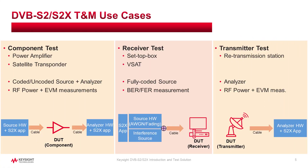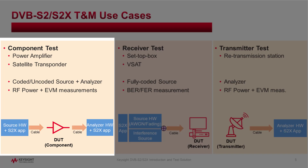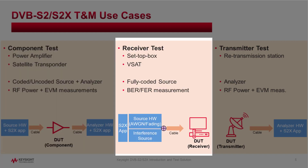DVB-S2 and DVB-S2X testing is similar to previous DVB-S. There are three scenarios with different testing cases: component tests, receiver tests, and transmitter tests. For component tests, it could be a power amplifier or satellite transporter, and it needs both source and analyzer. The source can be coded or uncoded since it mainly focuses on RF performance. The measurements include power measurement and modulation analysis like EVM. Receiver tests such as set-top box or VSAT need a fully coded source because they require BER or FER measurement.